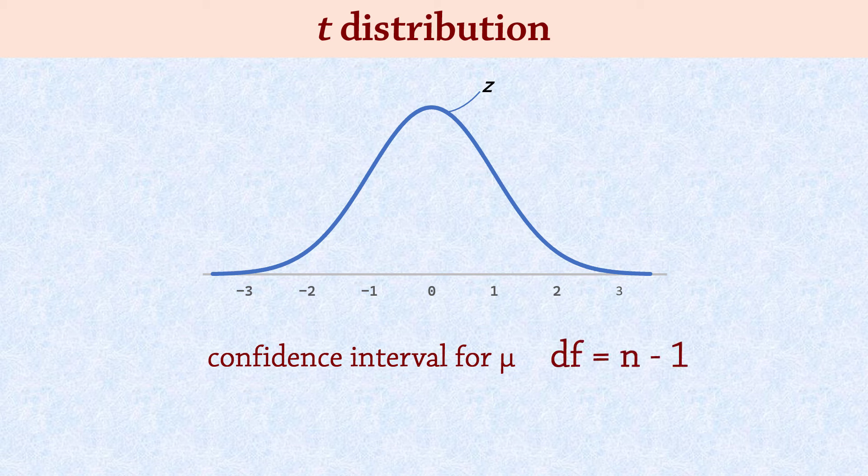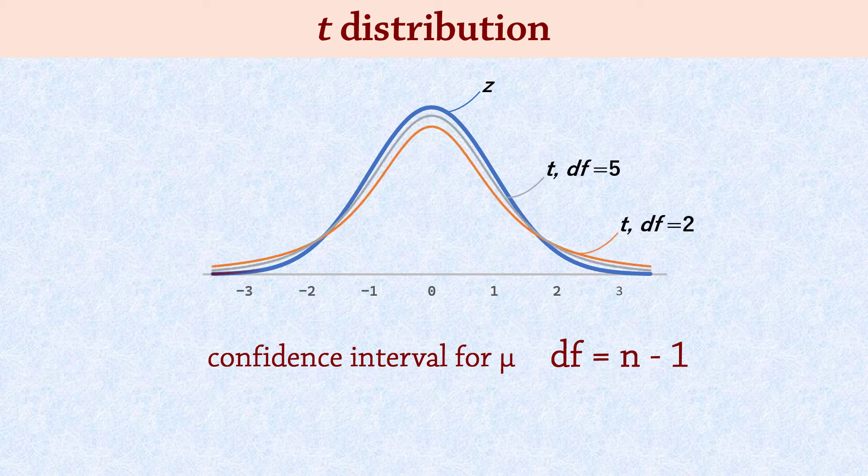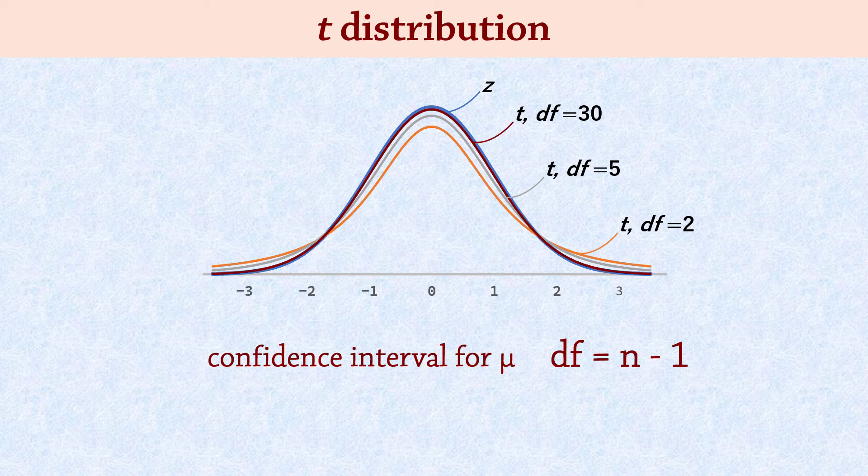Here is the T distribution curve for 2 degrees of freedom, for 5, and for 30. We see that as degrees of freedom increases, the T distribution approaches the Z distribution.